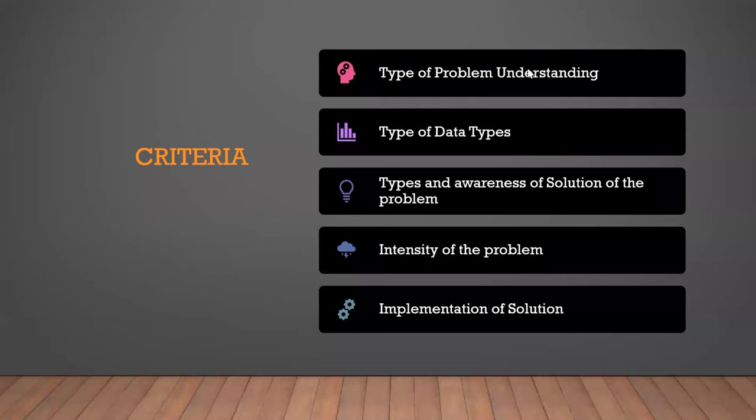If you have not seen my video on problem statement and matrix, I would suggest you go and see those videos to know the complete setup of a problem statement or opportunity statement, as they will be useful here. Whenever we are approaching a problem, there are mainly five criteria: one is the type of problem and its understanding; two is the data type involved; three is the type and awareness of the solution; four is the intensity of the problem; and five is implementation of the solution.